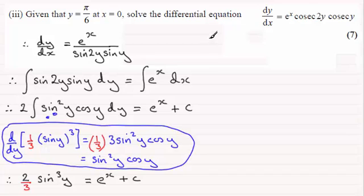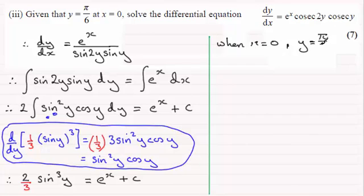Now we've just got to work out what that constant of integration c is, and we pick up on these initial conditions - that is, when x = 0 we know that y = π/6. If I substitute these values into here, we've got 2/3 sin³(π/6) must equal e^0 + c.